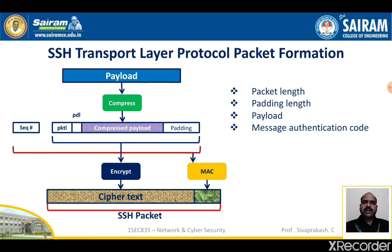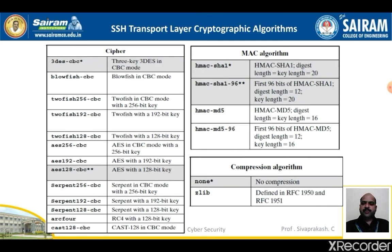Once an encryption algorithm has been negotiated, the entire packet excluding the MAC field is encrypted after the MAC value is calculated. The SSH transport layer packet exchange consists of a sequence of steps. The first step is identification string exchange, beginning with the client sending a packet with an identification string of the form SSH protocol version, software, and comment CRLF. Next, in algorithm negotiation, each side sends an SSH message consisting of the list of supported algorithms in order of preference, including key exchange, encryption, MAC, and compression algorithms.